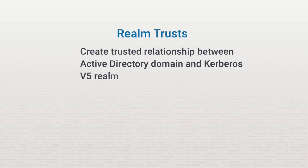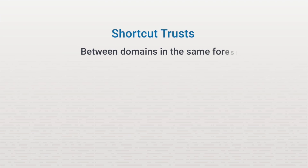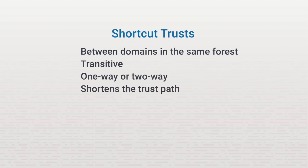The fourth type of trust is a realm trust. You use a realm trust to create a trusted relationship with a non-Microsoft Kerberos version 5 realm to access resources in a Microsoft domain. Realm trusts can be transitive or non-transitive, and they can also be one-way or two-way directional. Finally, we have shortcut trusts. Shortcut trusts are unique from the other trusts because they are between domains in the same forest. Shortcut trusts are transitive and can be one-way or two-way. They are used to speed up access to objects.